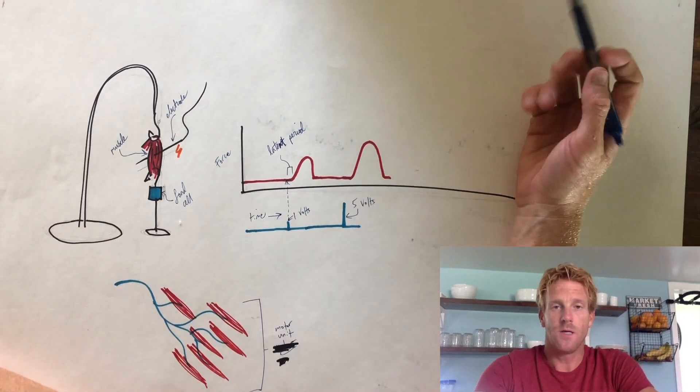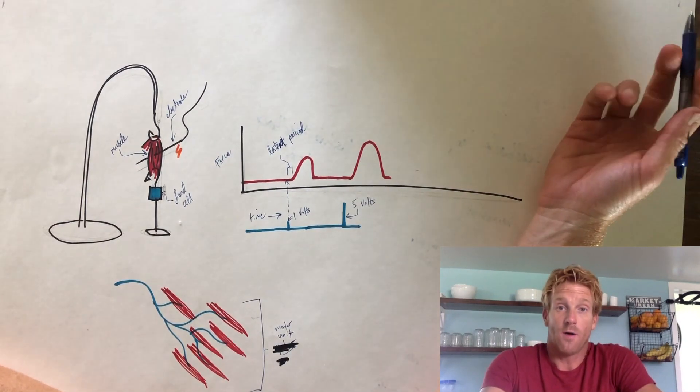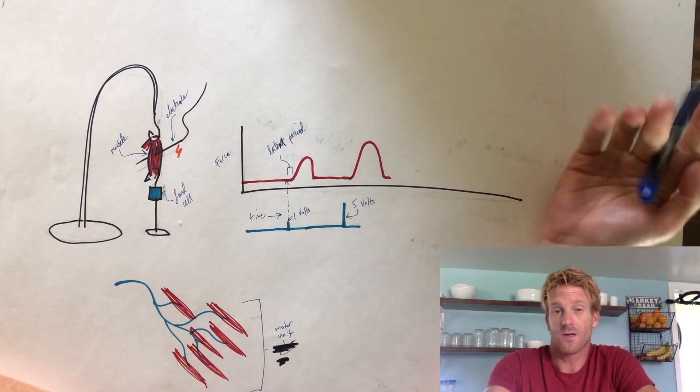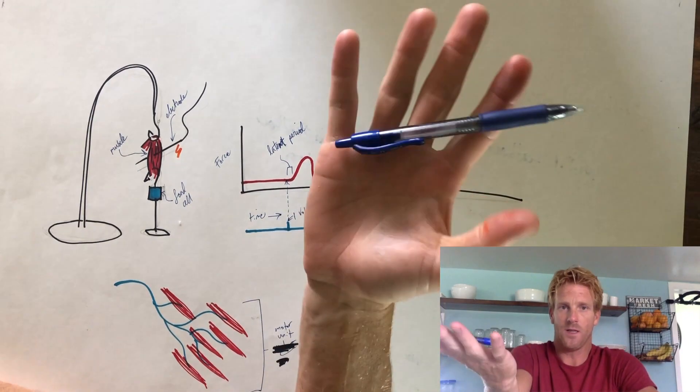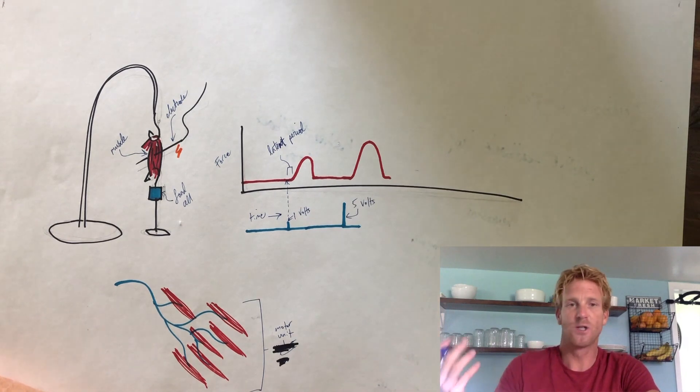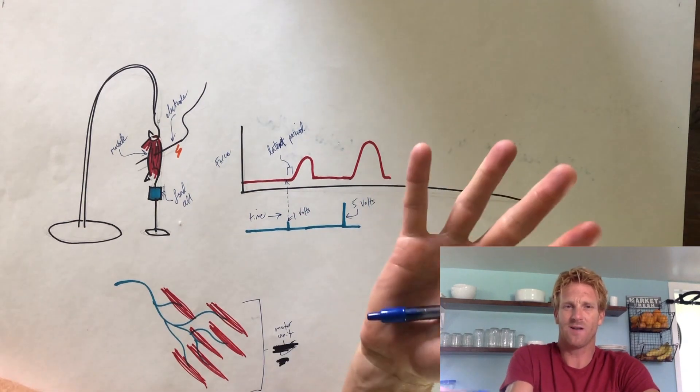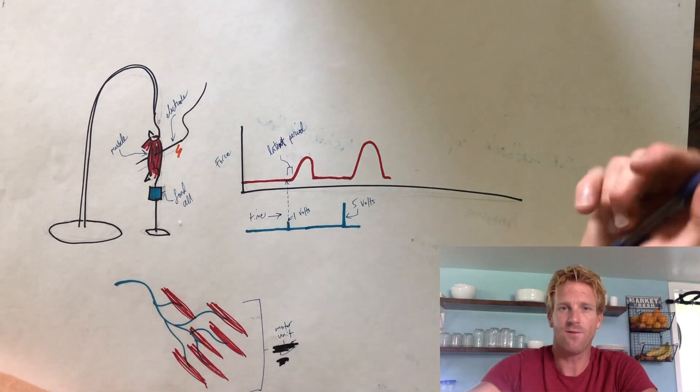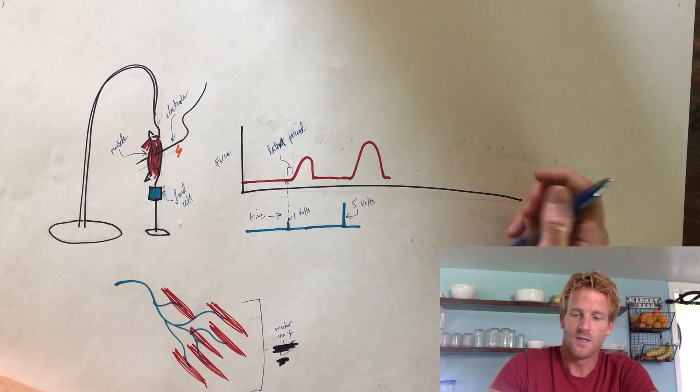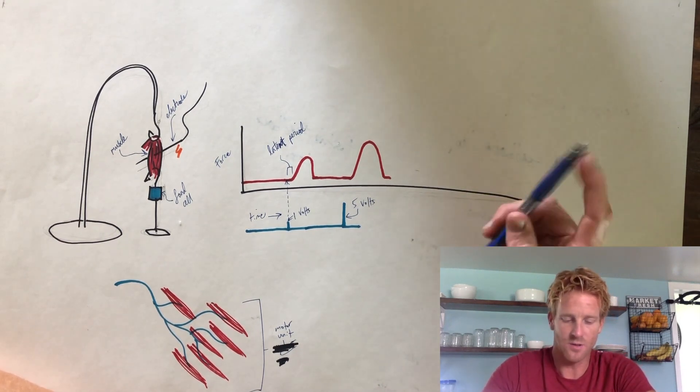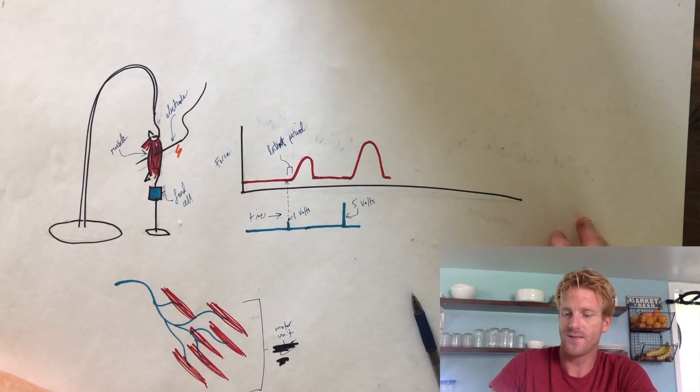And the more strength you need to produce, the more motor units are stimulated. Some motor units only innervate a couple of different muscle fibers. Those are going to produce just a little bit of force. Like if I want to lift this pin, but if I want to lift something super heavy, like a big dumbbell or something, I'm going to need to stimulate much more motor units. And the motor units that are kind of capable of lifting a lot of force, they might branch out into thousands of different muscle fibers to produce a whole lot of force. So the more force that a muscle needs to produce, the more motor units are stimulated.